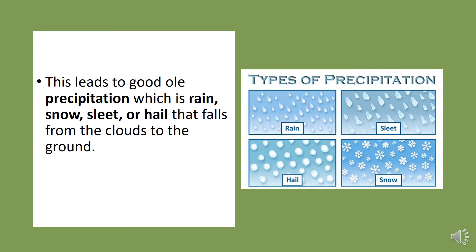This leads to good old precipitation, which is rain, snow, sleet, or hail that falls from the clouds to the ground.